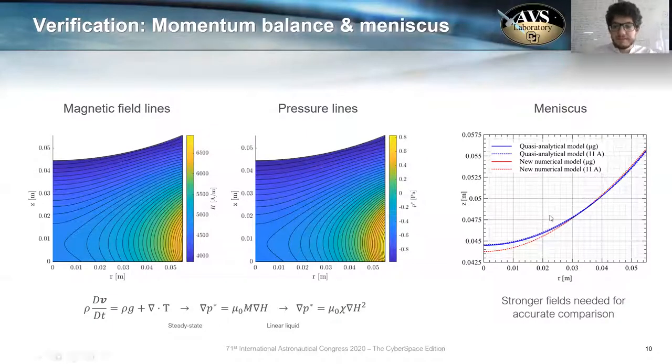We need strong magnetic fields to compare the meniscus profile in the steady state, because strong magnetic fields induce a large modification of the meniscus, or a large deformation. And so they are perfect for verifying our model, better say, with previous quasi-symmetric models.